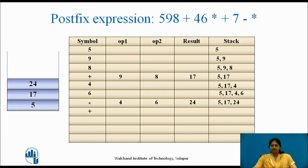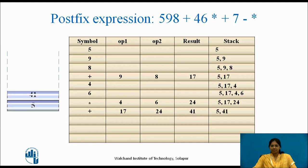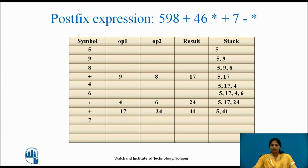The next symbol is '+' — pop the top two elements 24 and 17, perform addition, result is 41, push 41 on the stack (stack: 5, 41 with 41 at top). The next symbol is 7 — it is an operand, push it on the stack (stack: 5, 41, 7 with 7 at top).